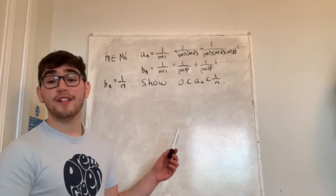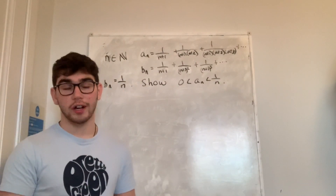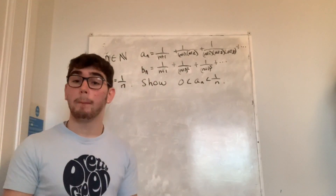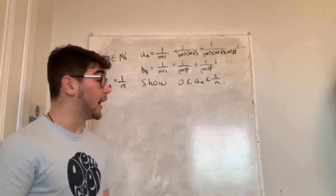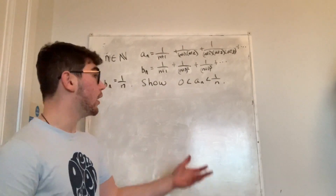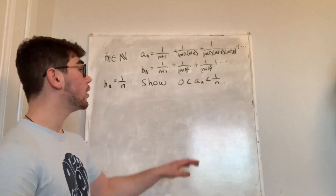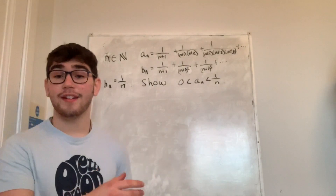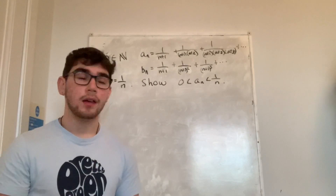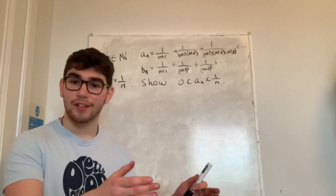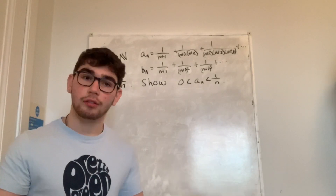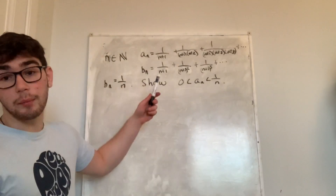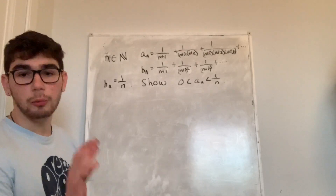Next, let's show that aₙ lies strictly between 0 and 1/n. The left-hand side of the inequality is almost free: aₙ is a sum of positive terms because n is a natural number, so aₙ > 0. For the right-hand side we need a bit more work. We'll compare aₙ to bₙ term by term. Looking at the first terms, they are equal: 1/(n+1) = 1/(n+1), so we set those aside.